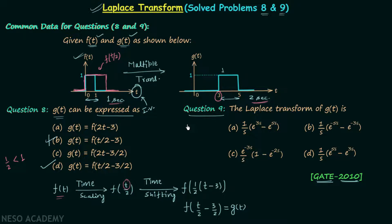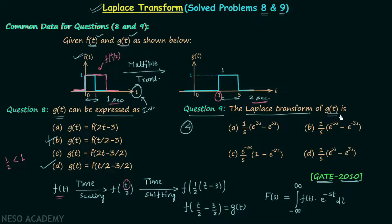Now we move towards question number 9, which is similar to question number 4 we have already solved. In question number 4 we calculated the bilateral Laplace transform using the formula: the bilateral Laplace transform equals the integration from minus infinity to infinity of f(t) multiplied by the integral kernel e^(−st) dt. Here we need to find the Laplace transform of g(t), called G(s). Instead of direct integration, I will follow an alternate method.